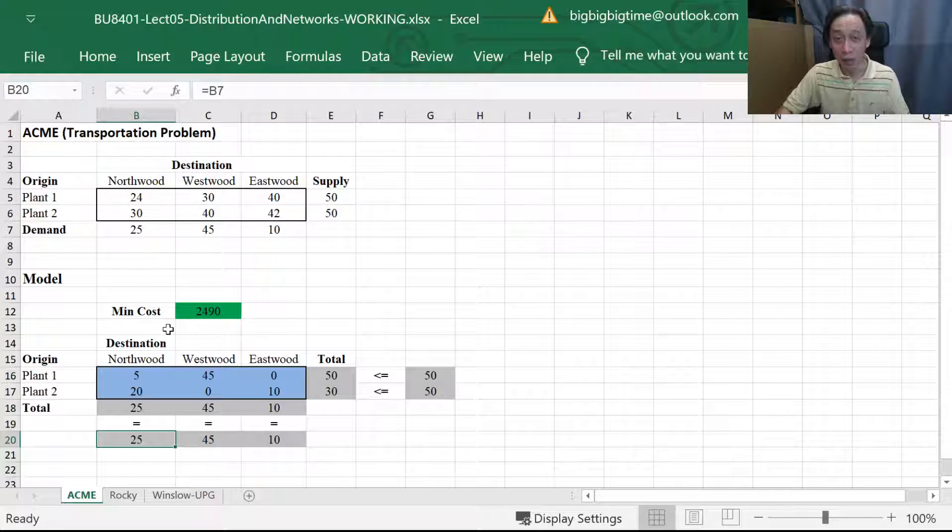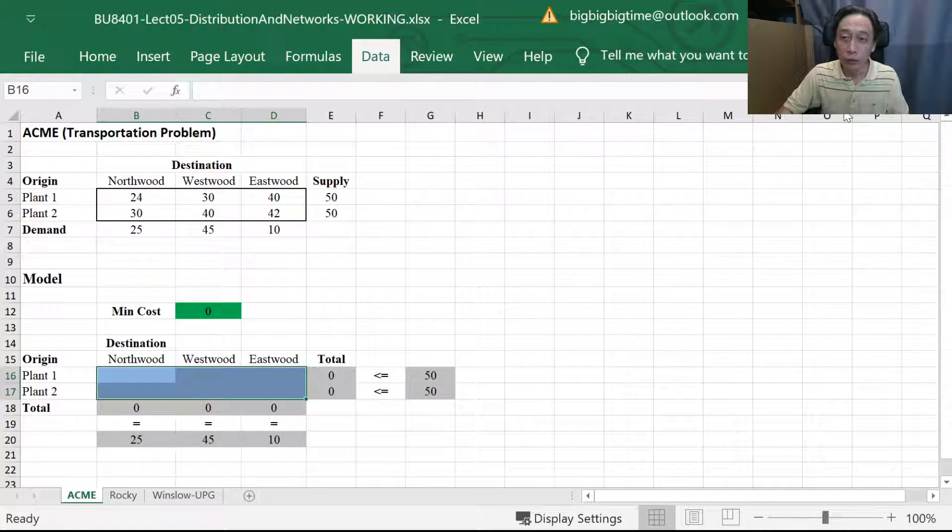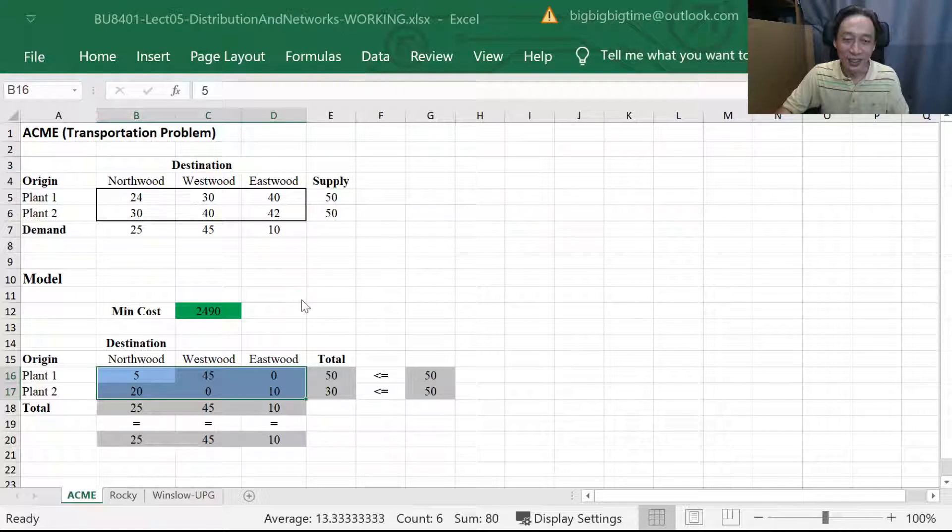Next thing, just very quickly I want to show you that if we remove this integer constraint we'll find that we can actually solve it and get exactly the same answer. There's no difference and they are still by chance integer.